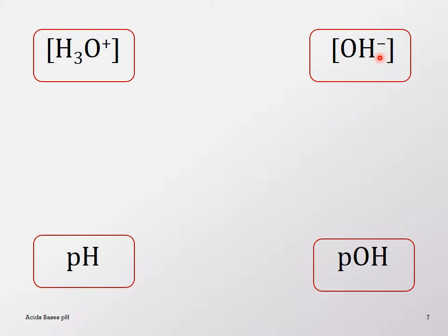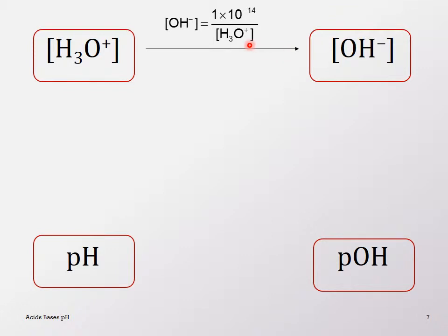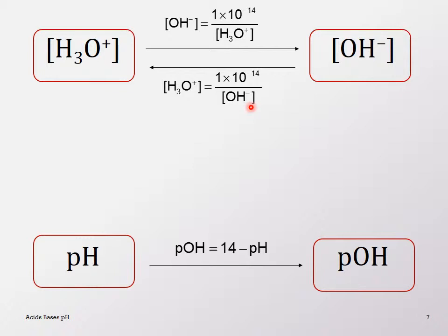Going from hydronium ion concentration to hydroxide: you take Kw (1×10⁻¹⁴) divided by the hydronium ion concentration. Going backward, take 1×10⁻¹⁴ divided by the hydroxide ion concentration. For pH to pOH: subtract pH from 14 to get pOH, and subtract pOH from 14 to get pH. Both just subtract from each other; the ion concentrations divide by each other.